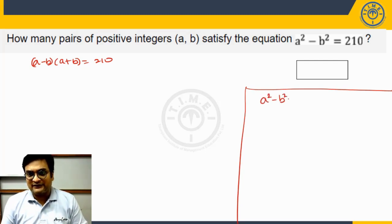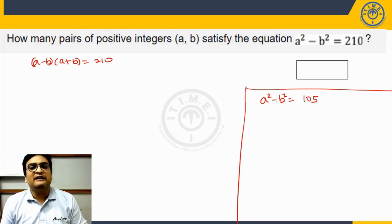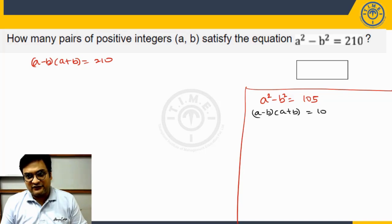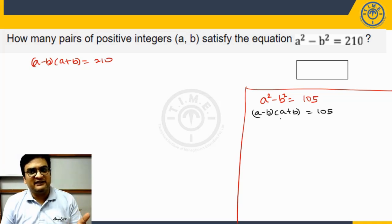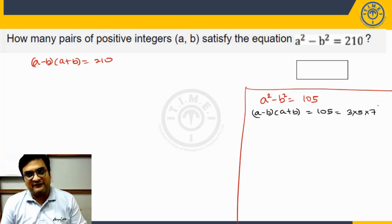Whenever you have a question of the type a² - b² equal to an odd number, let's say 105, and a and b are positive integers — the way we go about solving it is, once again we factorize: (a - b)(a + b) = 105. Since a and b are positive integers, a + b will definitely be greater than a - b. The sum of two positive integers is always more than their difference.